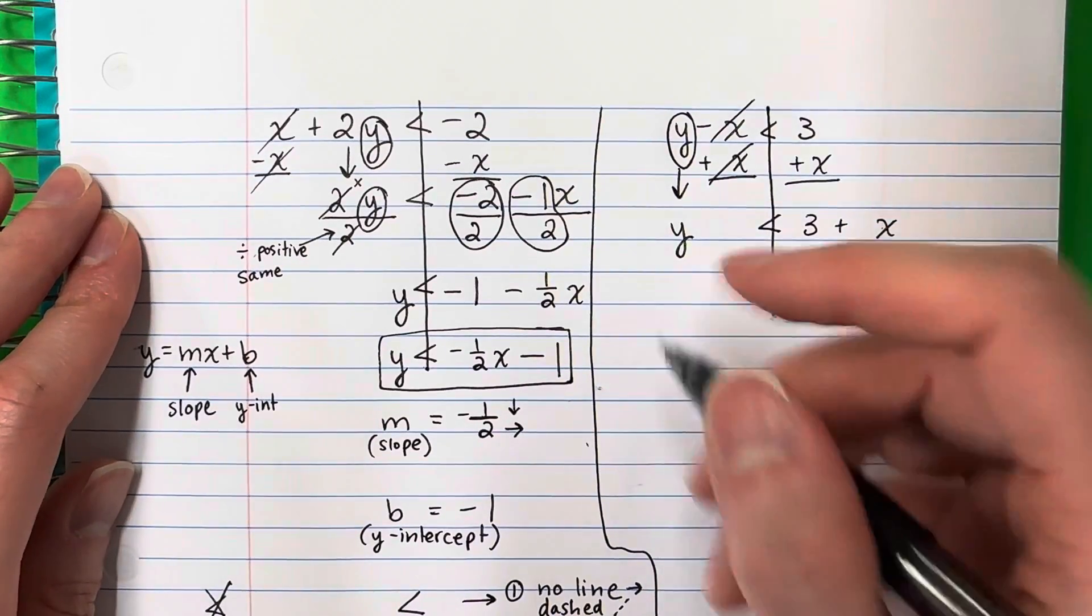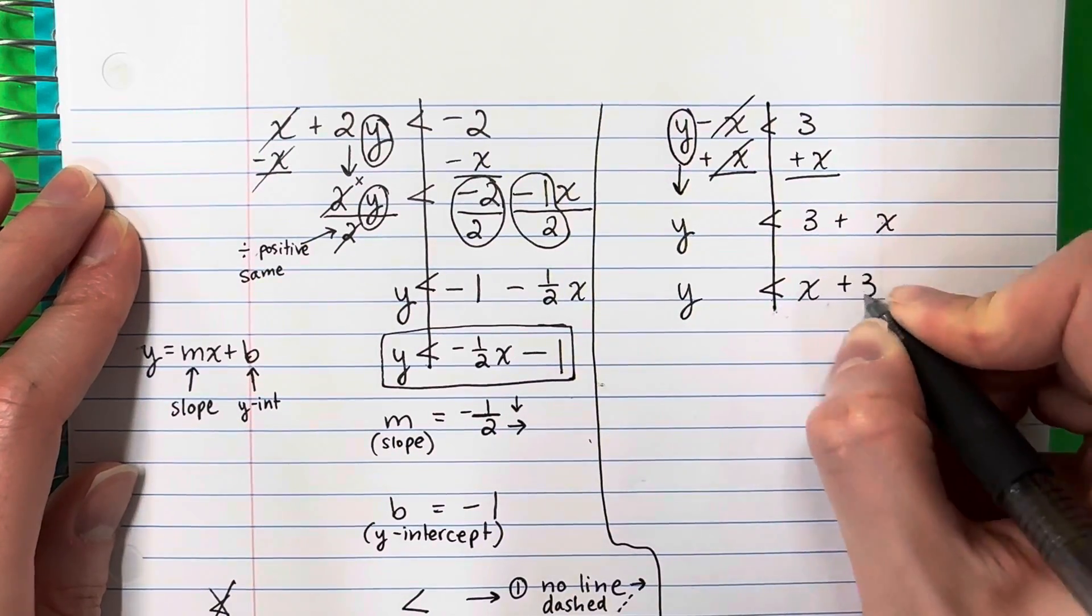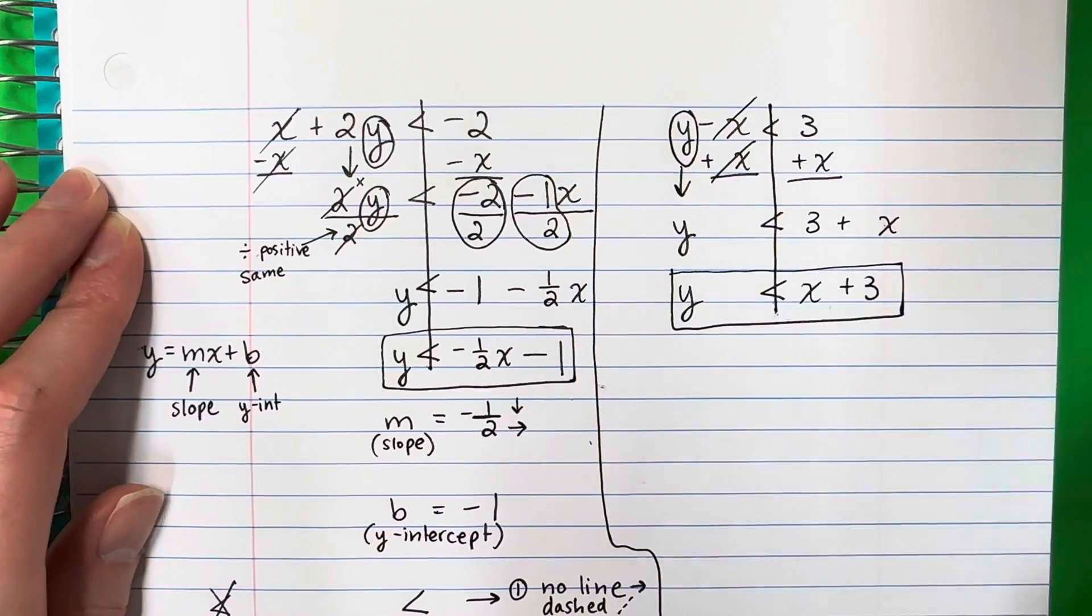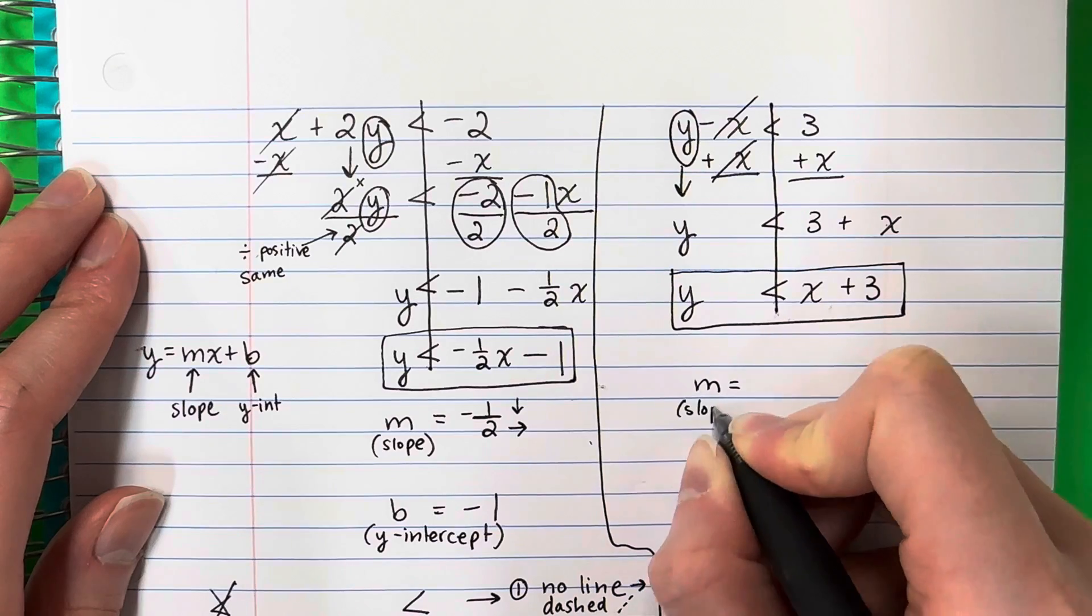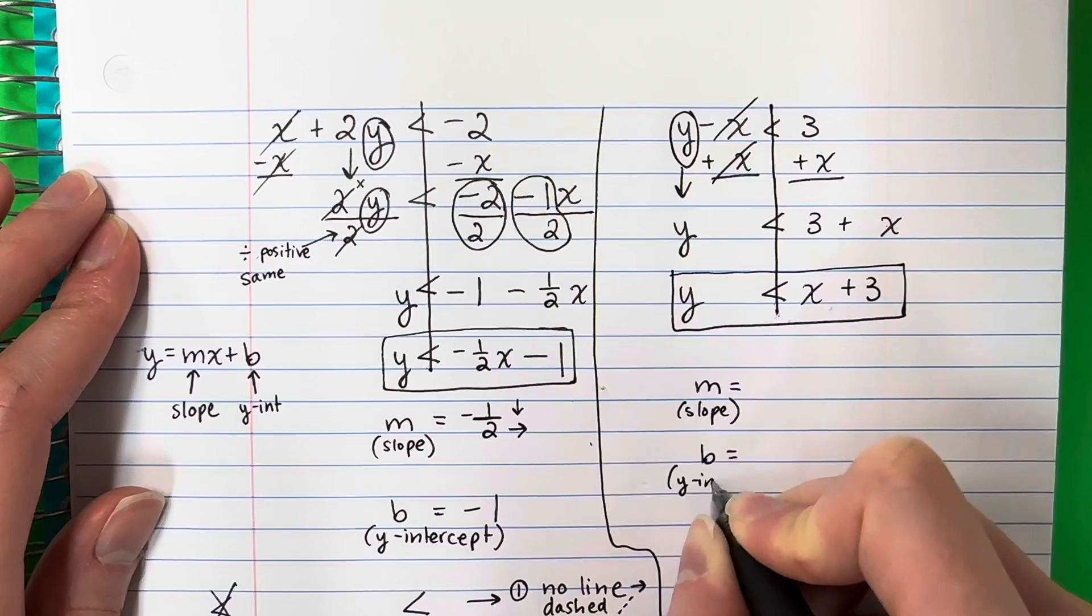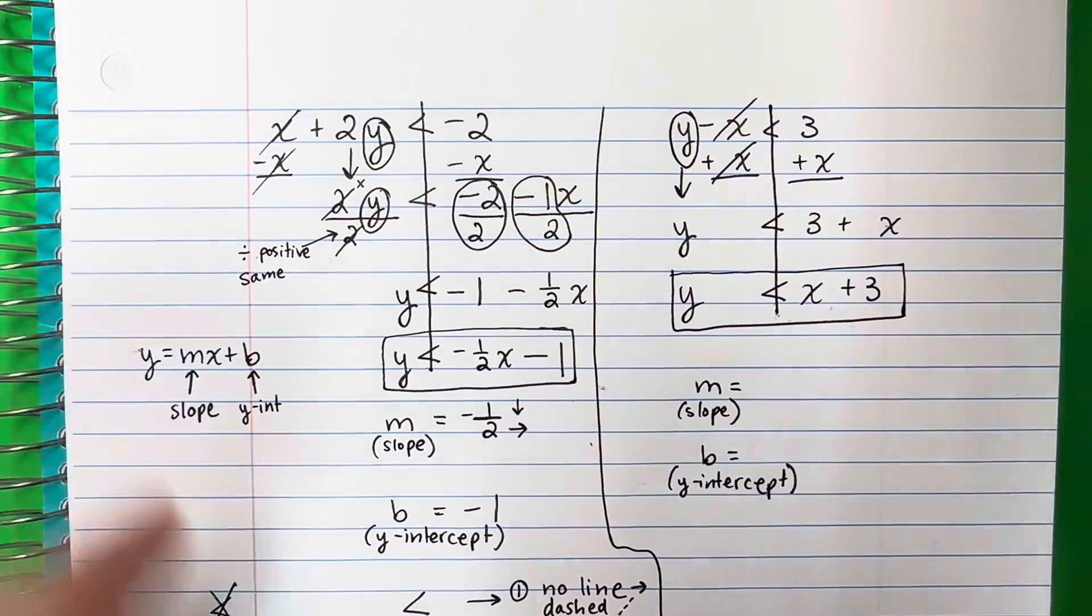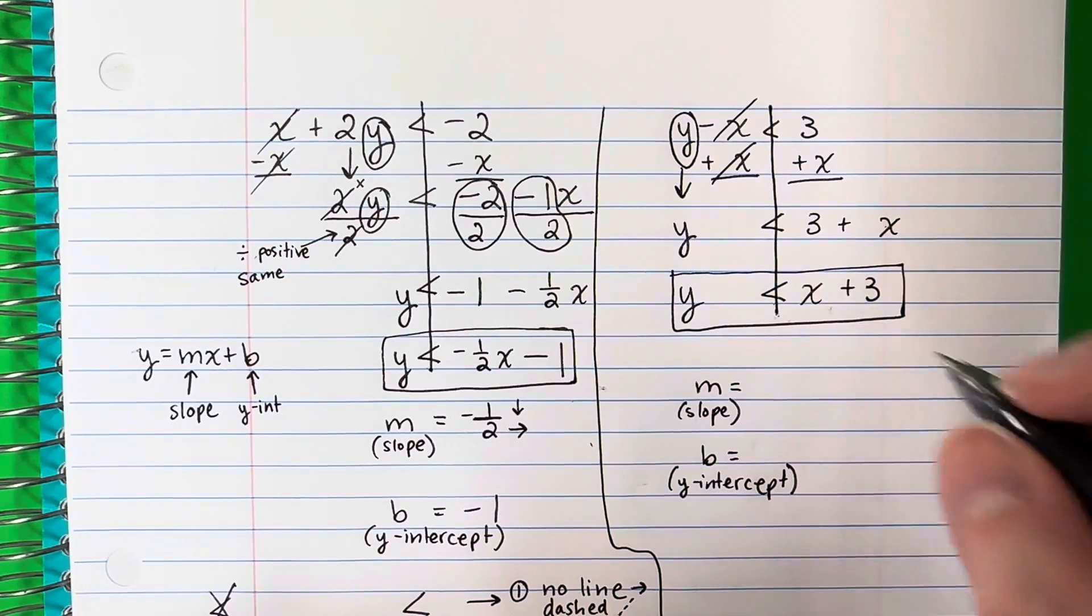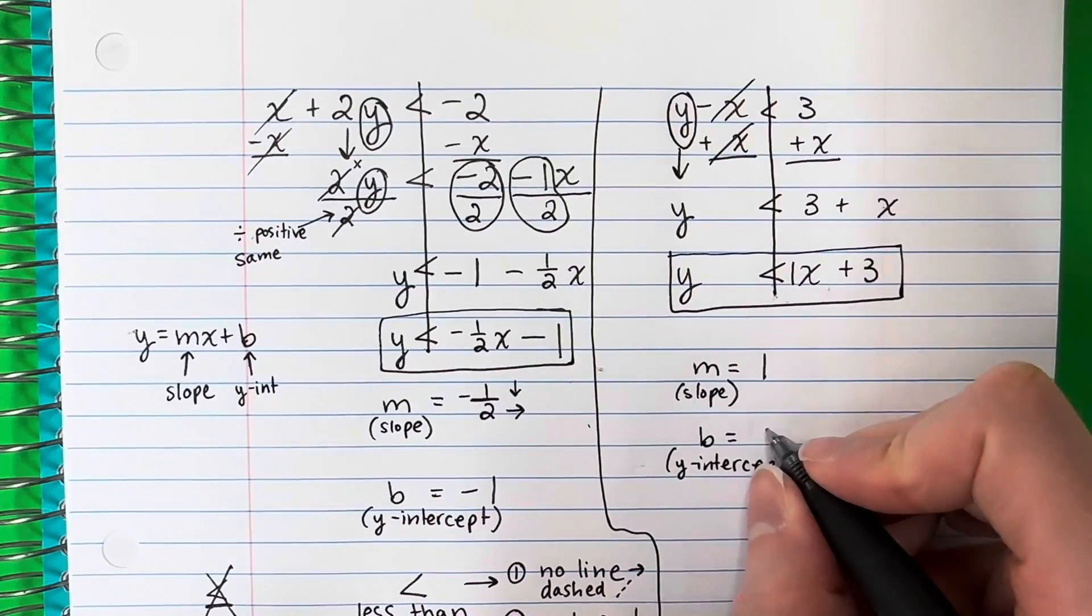And then we're going to go ahead and switch them. So y is less than x positive 3, plus 3. Now let's go ahead and do m which is the slope, and b which is the y-intercept. M is the number with x. If there's no number, it's one. So one. And b is the other number, three.